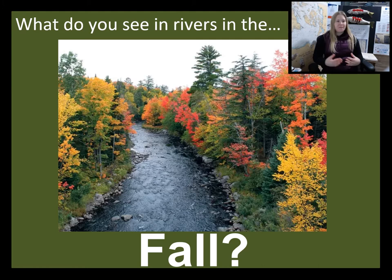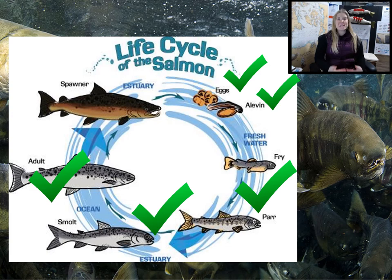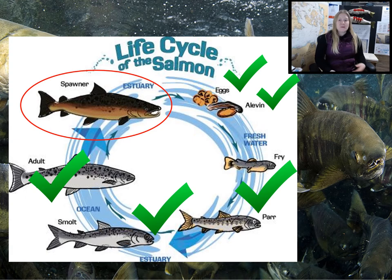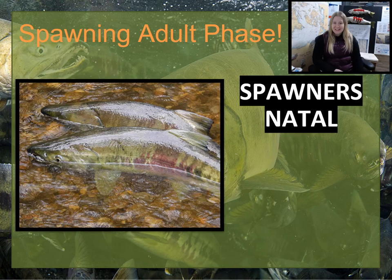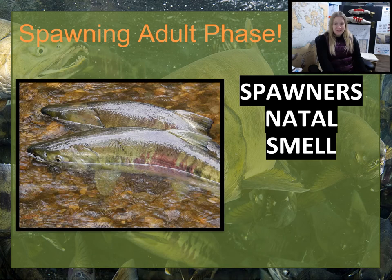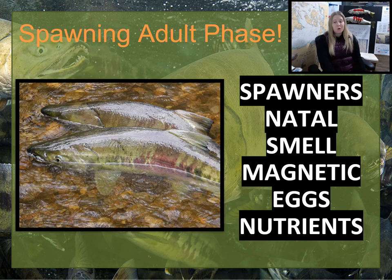It's now fall or autumn — what kinds of things do we see in fall? Changing leaves? Pumpkins? Maybe salmon returning home? Spawning starts in the fall and it's the last thing salmon do before they die, but it produces new eggs and new baby salmon. As spawners, salmon return to their natal stream — the same stream where they were born — navigating home by using their sense of smell and by following Earth's magnetic field, kind of like a compass. After they lay their eggs, they die, and their carcasses provide nutrients for the whole ecosystem.